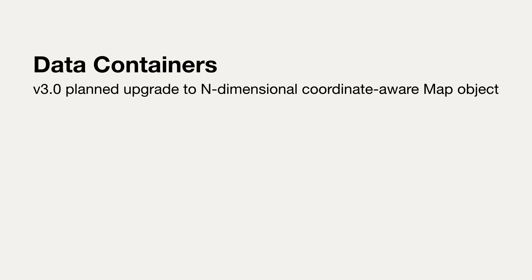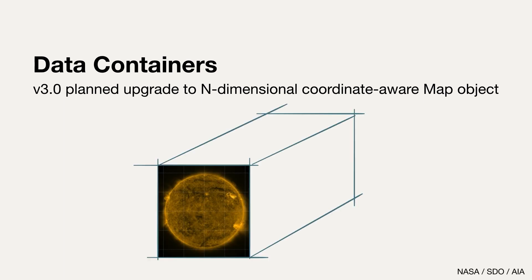For version 3.0, we plan to upgrade from a two-dimensional coordinate-aware data container to an N-dimensional one using a SunPy affiliated package called NDcube. So with NDcube, you could have a map object that contains three-dimensional data — latitude, longitude, and time — and then extract a subset of that data using a range of latitudes and longitudes. Also for 3.0, we plan to include another container for spectral data.